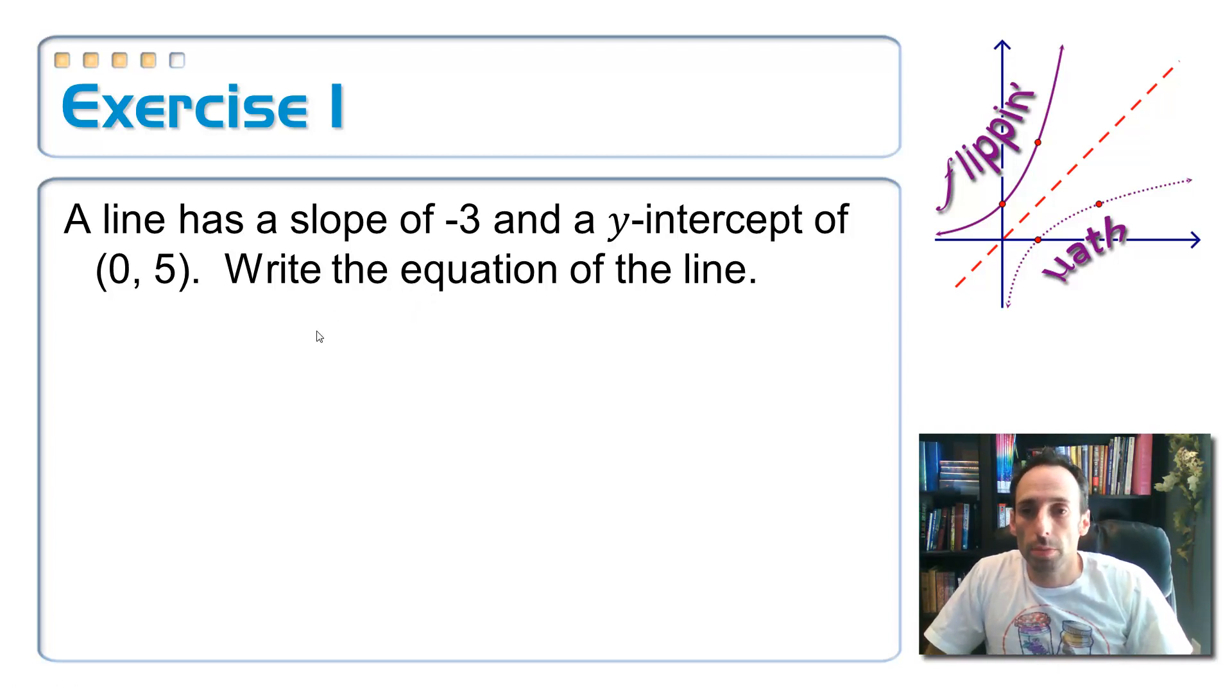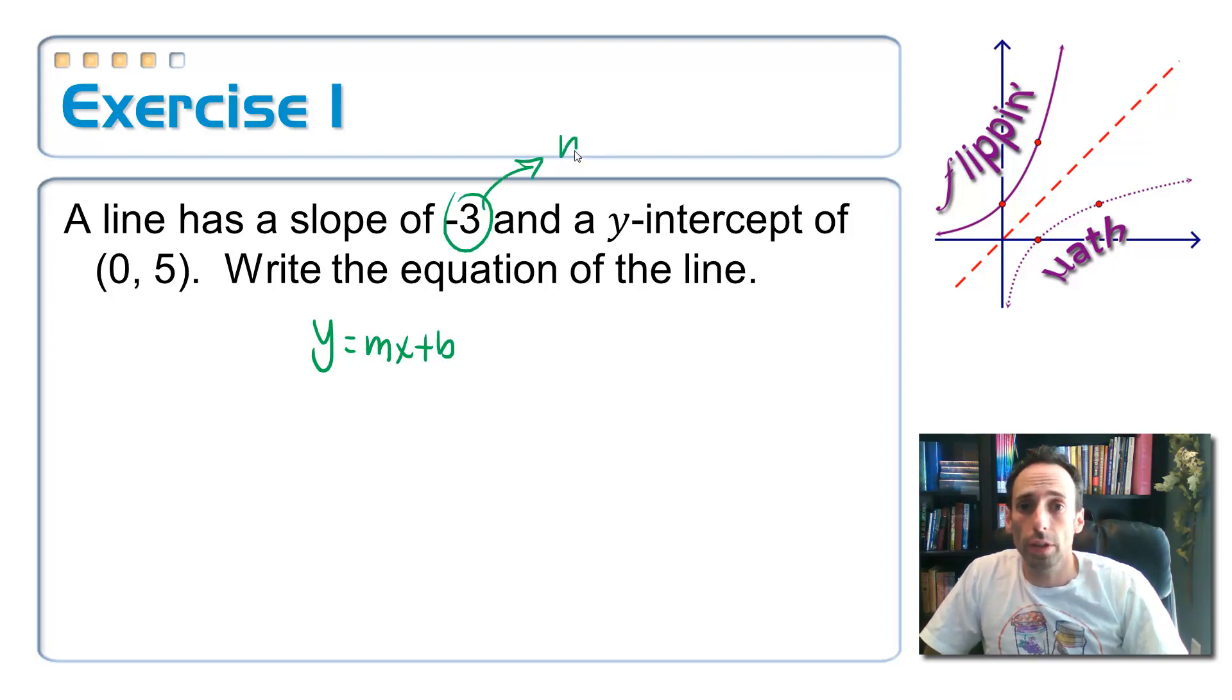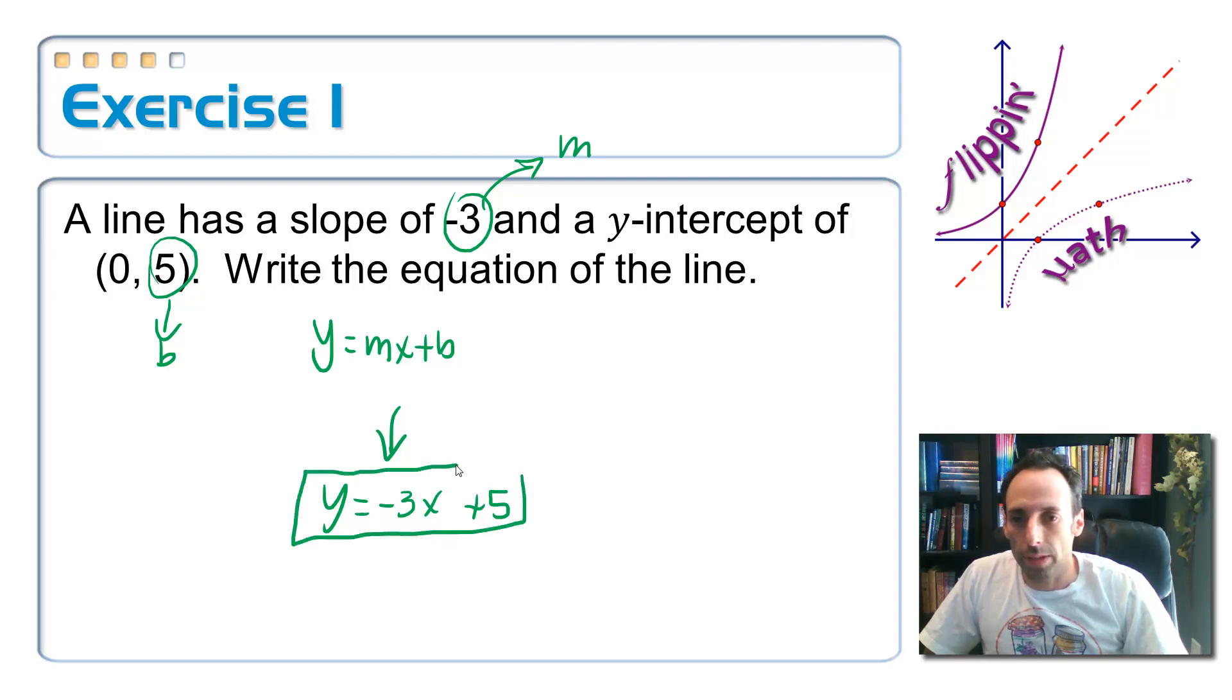As we've talked about before, the equation of the line can be simply written as y equals mx plus b. We already have our m, our slope is negative three, and our b here is the y-intercept which is five. So just plug in your numbers. Y is equal to negative three x plus five and that's it. It's done.